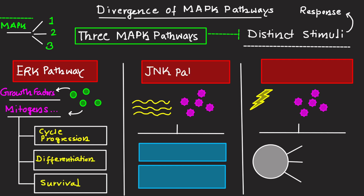The second is the JNK pathway, which stands for c-Jun N-terminal Kinase. This pathway is triggered by stress signals such as UV radiation or inflammatory cytokines. The JNK pathway regulates apoptosis, immune response, and stress adaptation, allowing the cell to manage programmed cell death, immune activity, and stress responses.